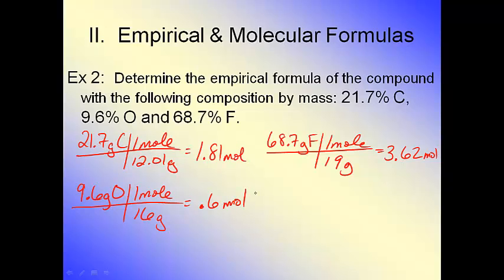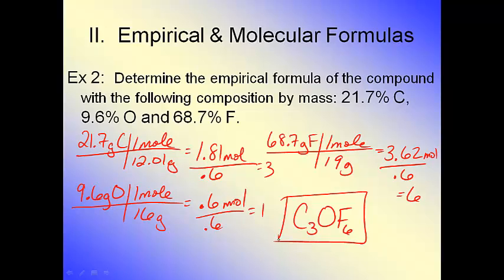Now remember, this is not math class. These numbers actually matter, like they're matter and physical things in the universe. So now I divide by the smallest one, which is 0.6. And the numbers here are pretty easy to work with, so obviously this is equal to 3, this is equal to 1, and this one's equal to 6, because 18 divided by 6 is 3, 36 divided by 6 is 6. So this formula is C3OF6, just like that.